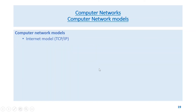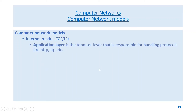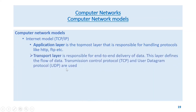The next model is the internet model: TCP/IP. It has four layers. The top layer is the application layer, which is responsible for handling protocols like HTTP, FTP, etc.